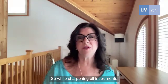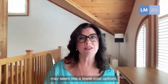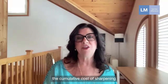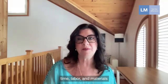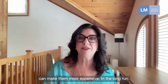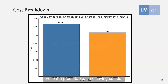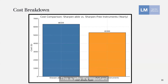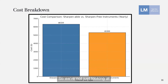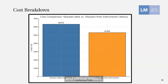While sharpenable instruments may seem lower cost upfront, the cumulative cost of sharpening time, labor, and materials can make them more expensive in the long run. When we shift to a long-term investment mindset, sharpen-free instruments present a predictable, time-saving solution that enhances efficiency and reduces hidden costs. This is why it's important to calculate and compare per-patient costs — making decisions based on true value and clinical impact, not just numbers in isolation.